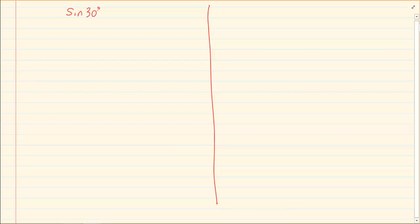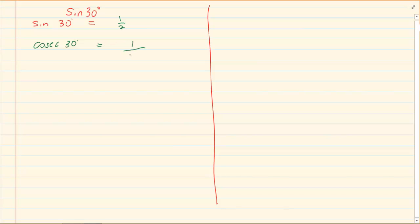Let us do our calculator work. There are two styles they can give you. Number one is where they simply give you the angle. So if I gave you sin 30 degrees, all you would do is press sin 30 equals and that gives you a half. Now if you had cosec 30 degrees — because it is not on your calculator — you know cosec is the same as 1 over sin. So press the fraction button, put 1 on top and sin 30 degrees on the bottom, which equals 2.